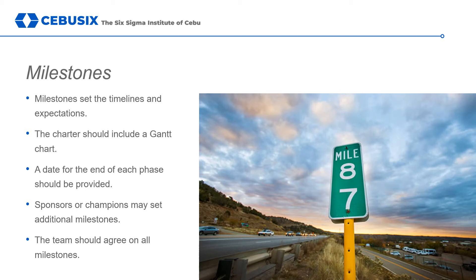If dates seem implausible, teams can present a counter-schedule with logical arguments regarding why the original schedule would not work. In addition to milestones at the end of each project phase, Six Sigma teams might also want to set milestones for work within each phase, specifically for the more laborious measure, analyze, and improve phases.